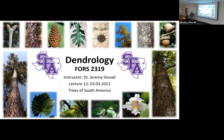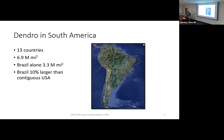Today we're covering trees of South America. As we look at a little bit of context, the continent includes 13 countries which cover 6.9 million square miles. Brazil alone is nearly half of that — 3.3 million square miles — and it's the fifth largest country in the world. Brazil itself is actually 10% larger than the contiguous United States, so you've got a pretty vast land area.